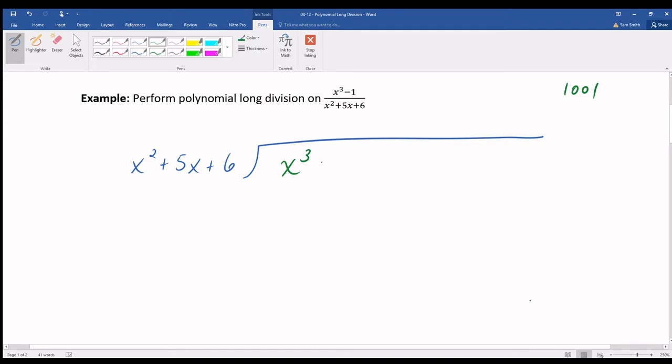And just like a number like a thousand and one is written using zeros as placeholders, I'm going to put in placeholders to indicate that I have zero x squareds, zero x's, and negative one.